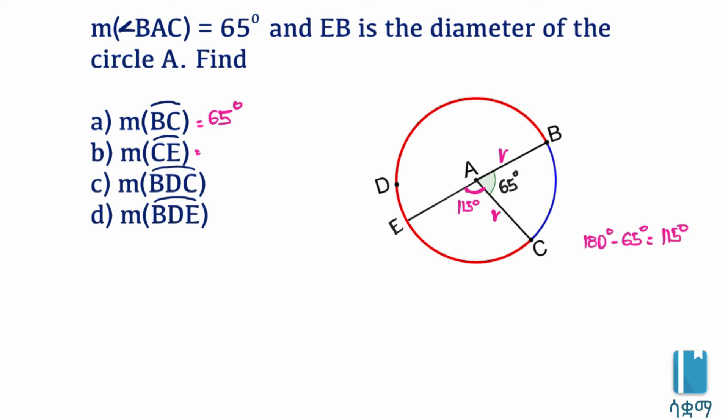The diameter is equal to 180 degrees. This is 7 degrees and 65 degrees — working through the arc measures using the central angle theorem.